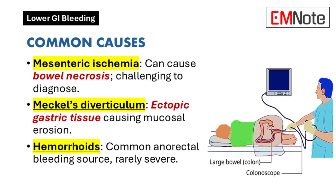Meckel's diverticulum, often located in the terminal ileum, is composed of embryonic tissue. More than half of these lesions contain ectopic gastric tissue capable of secreting enzymes, which can cause mucosal erosion and bleeding. Hemorrhoids are the most common source of anorectal bleeding but rarely result in significant hemorrhage.